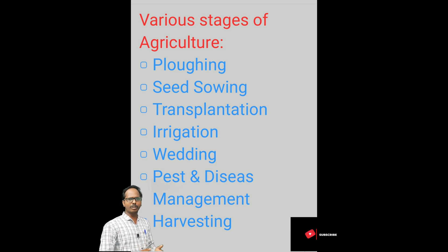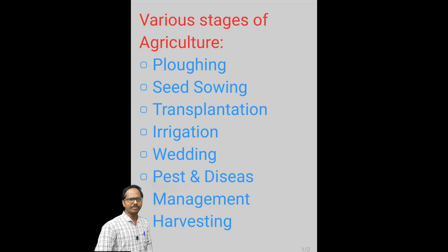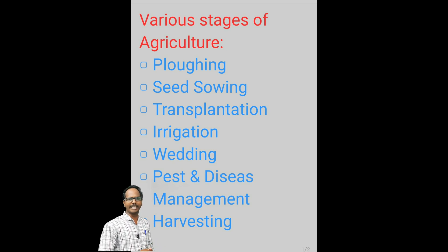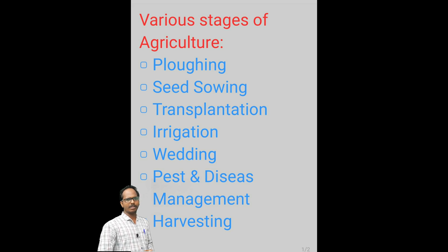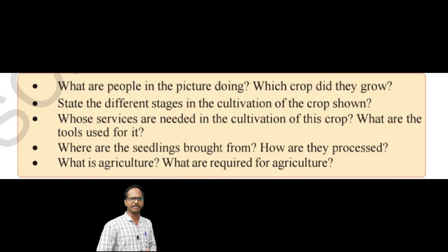The stages include seed sowing, raising a nursery, transplantation, and irrigation. Irrigation means to supply water to an area through long pipes so that the crop will grow. Then comes weeding, pest and disease management, and finally harvesting.